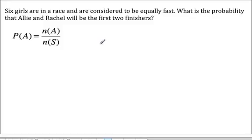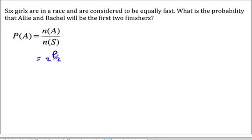Six girls are in a race and are considered to be equally fast. What is the probability that Allie and Rachel will be the first two finishers? We have two racers and we're choosing both of them to come in first and second, so that's the permutation of two choose two, which is two factorial over zero factorial — that's two.